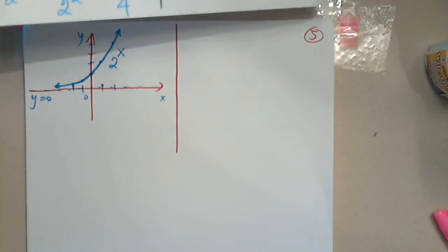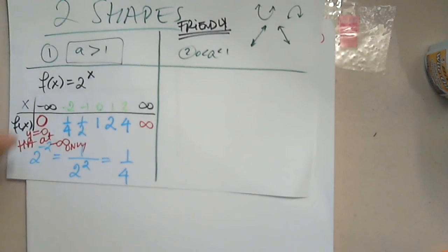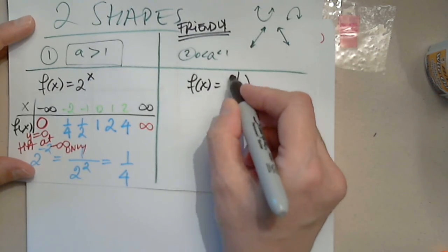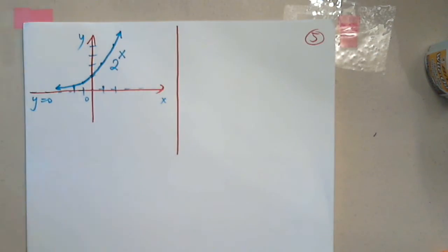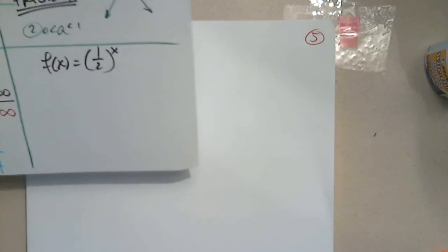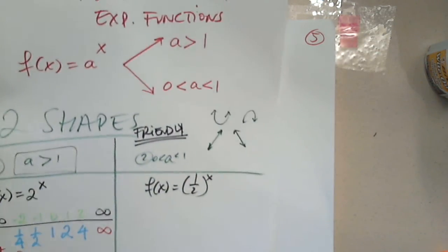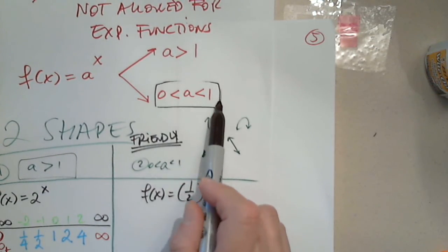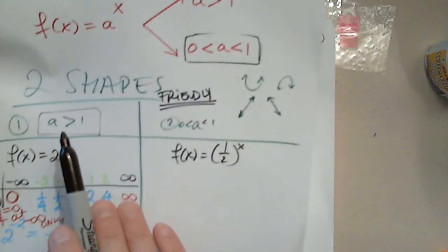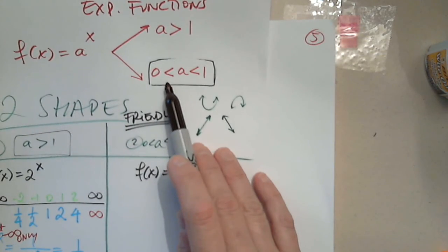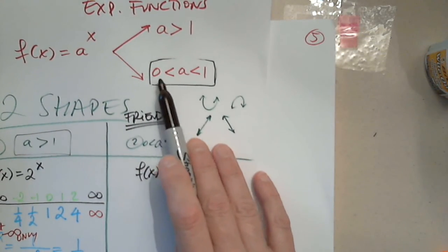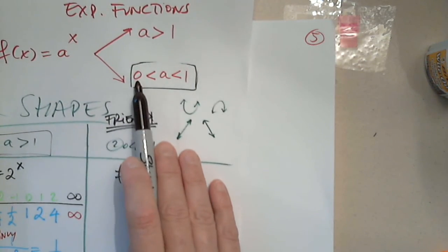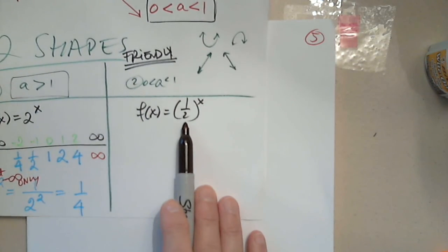Let's look at the other possibility — the other possible shape. This time we're going to use (1/2)^x. This is the second option: a tiny base between 0 and 1. So now a = 0.5, a number between 0 and 1, and I chose one half.